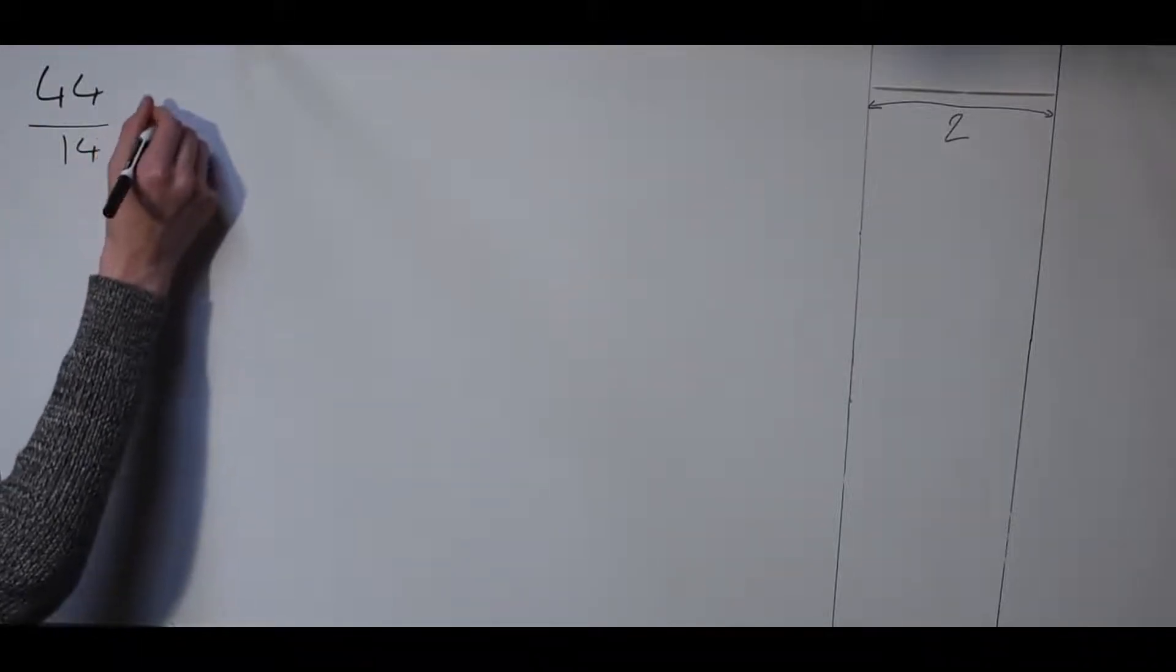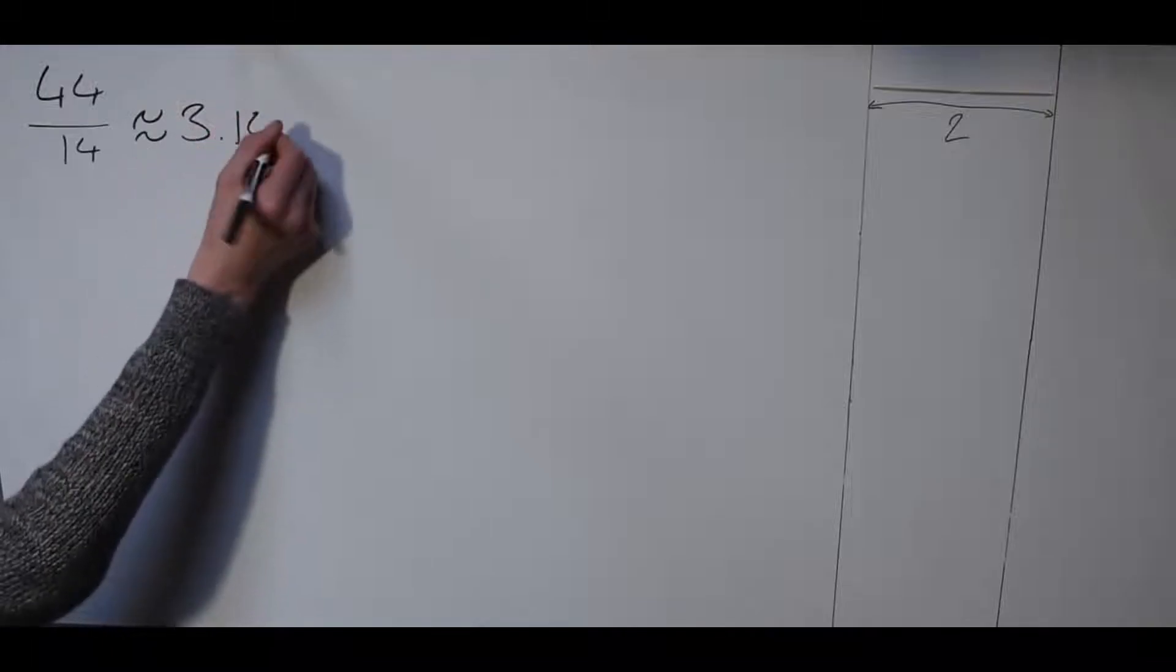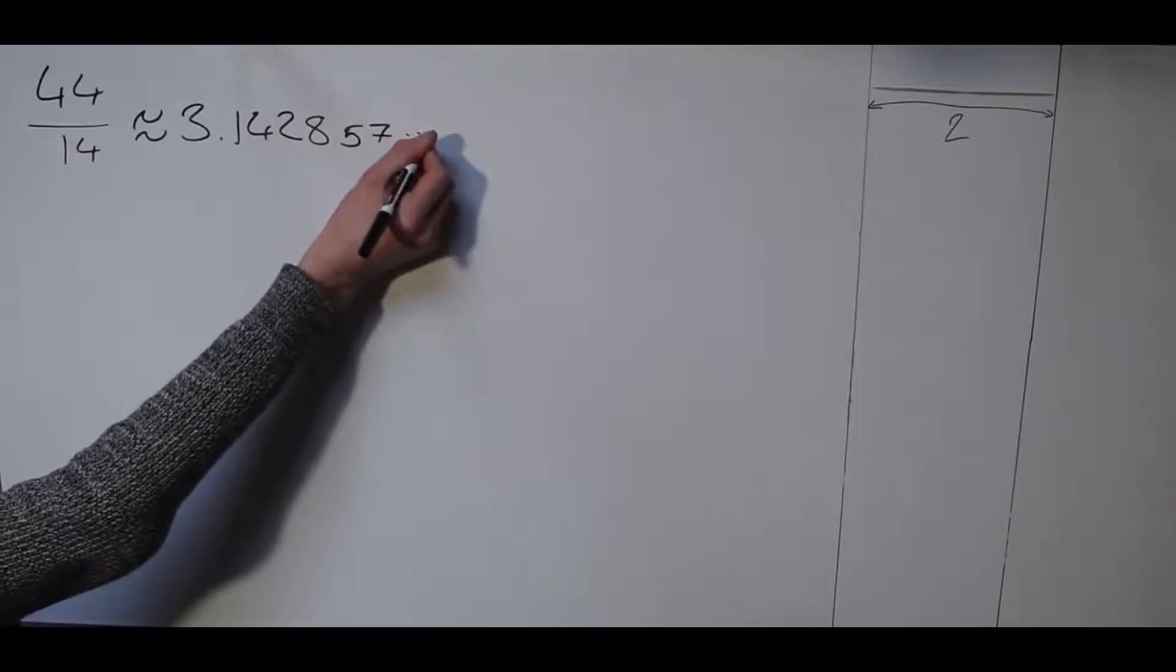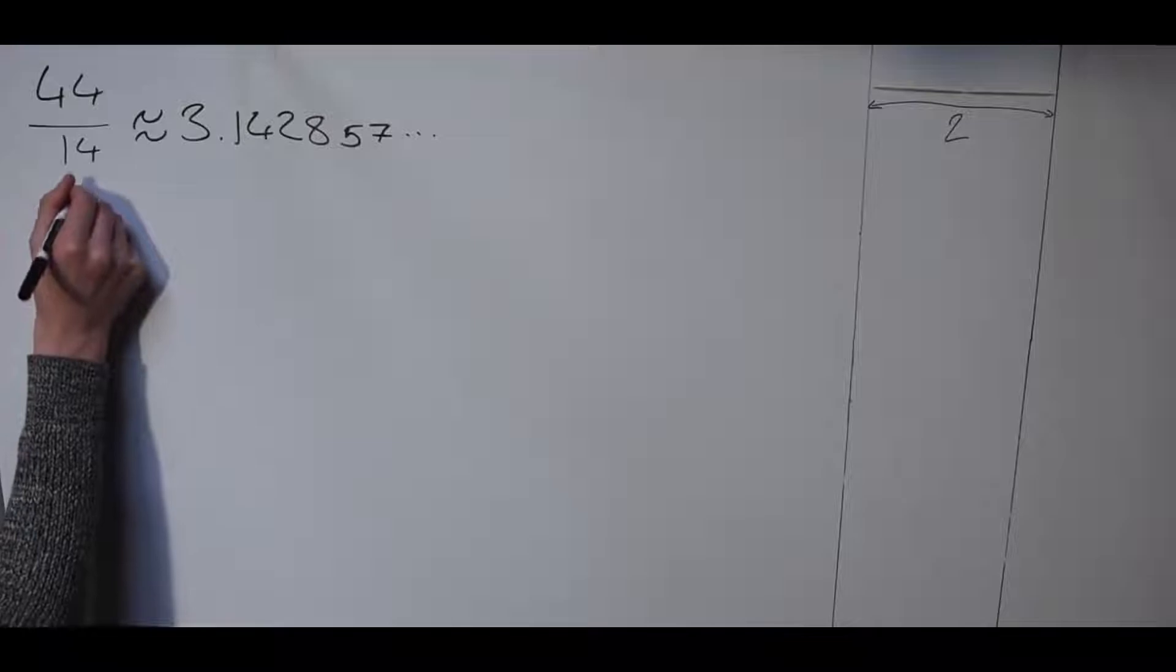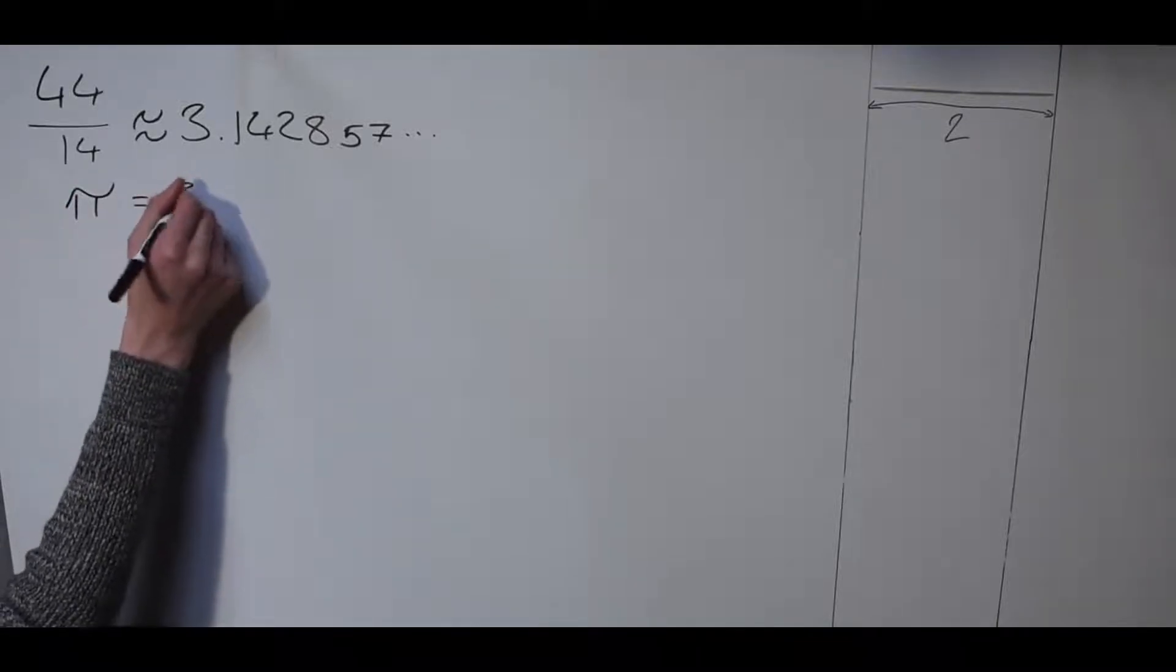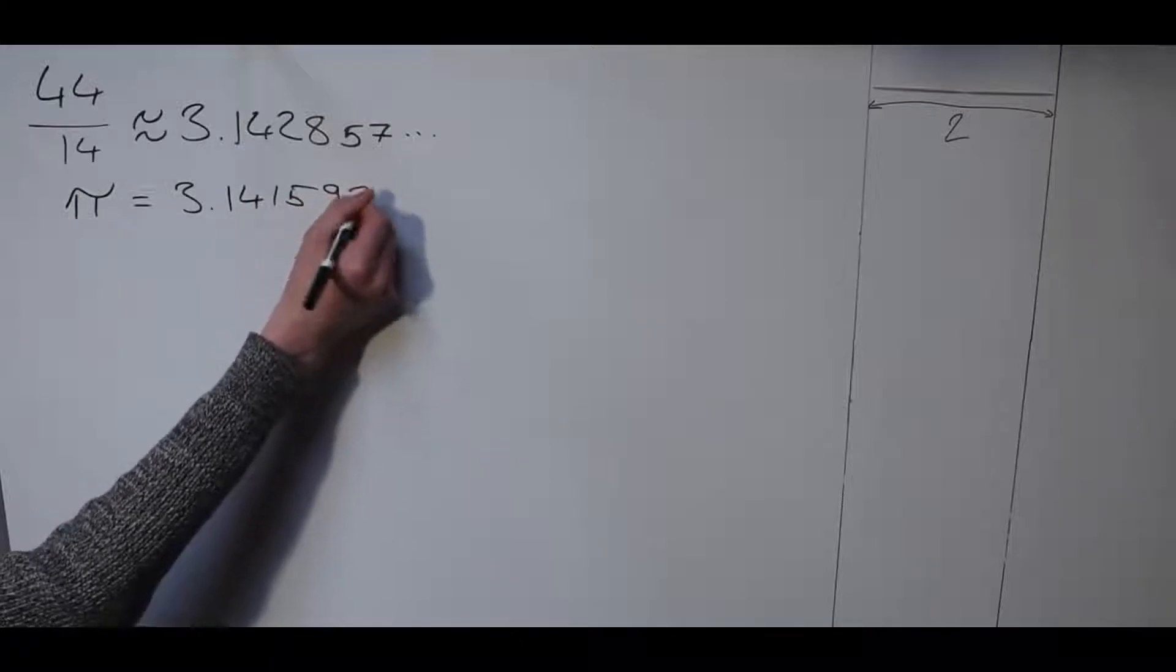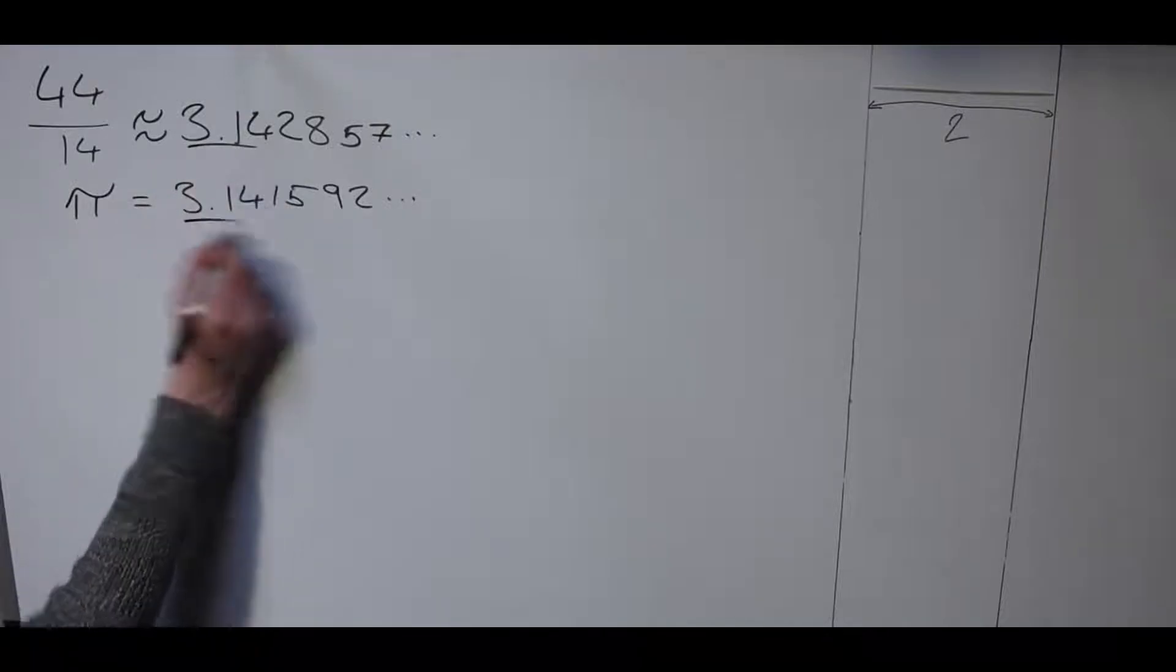Which gives an approximation for pi of 3.142857, and the actual value for pi is about 3.141592. That means our approximation is accurate to two decimal places.